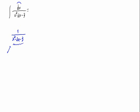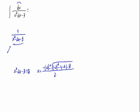First, let's have a look at the roots of the denominator. We have to solve the second degree equation equals 0 with the quadratic formula: x equals minus b plus or minus the square root of b squared minus 4ac, divided by 2a. This gives us 2 plus or minus the square root of 4 plus 12, divided by 2, which equals 2 plus or minus 4, divided by 2.